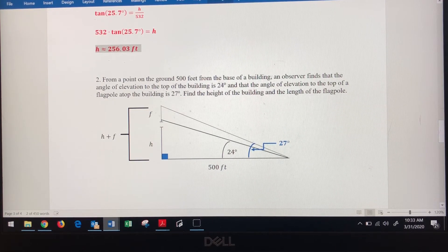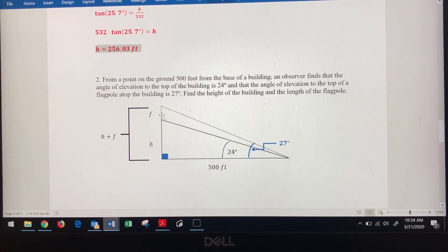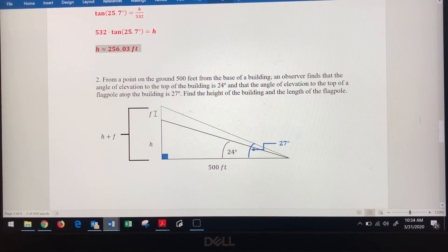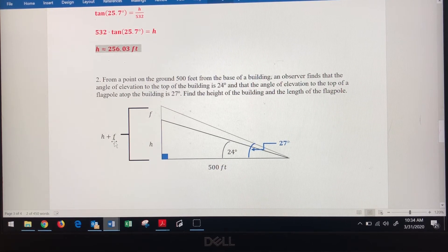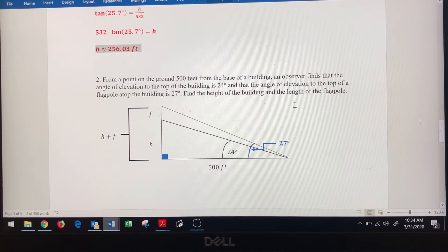So we want to find the height of the building, which is h here. We want to find the height of the flagpole, which is f here. We can't find f. There's nothing that we can do to find f without finding this whole vertical height here, the entire thing. So that's why I've got h plus f here. So we've got several different equations we're going to have to do here. First thing we want to do is solve for h.